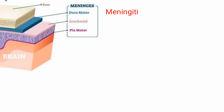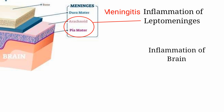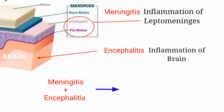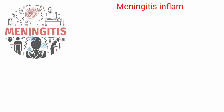Meningitis is the inflammation of the leptomeninges — the inner two membranes around the brain and spinal cord. It is not the inflammation of the brain itself; that is encephalitis. When both sometimes occur together, that condition is called meningoencephalitis.